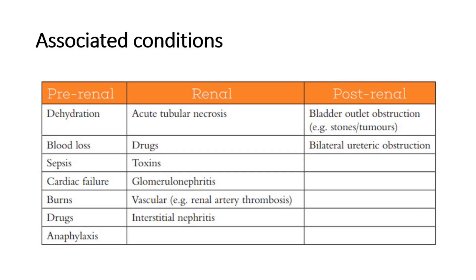Renal causes are acute tubular necrosis, drugs, toxins, glomerulonephritis, vascular causes like renal artery thrombosis, and interstitial nephritis. Whereas post-renal causes are bladder outlet obstruction due to stones or tumors, and bilateral ureteric obstruction.